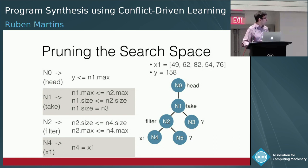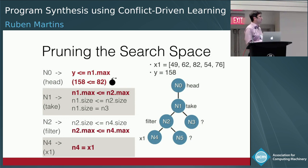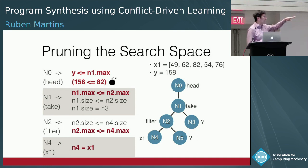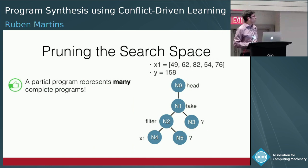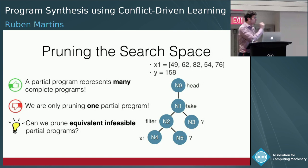The constraint solver says the system is infeasible. The reason is the constraints highlighted in red: filter, take, and sum all have the property that the maximum value is equal to or smaller than before. But our output integer 158 is larger than any integer in the input list, so this can never work. Can we take this insight further and learn equivalent infeasible partial programs?